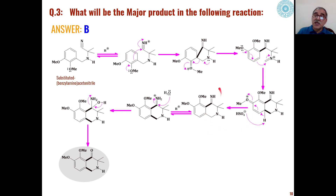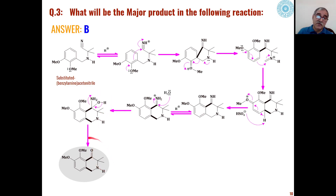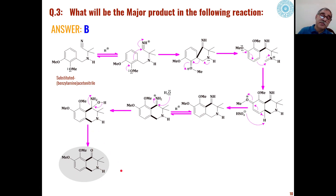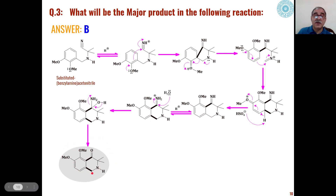Then this carbon-nitrogen double bond undergoes hydrolysis with the elimination of an ammonia molecule, and we will get these types of dihydropyridinones as the product. This is choice B in problem number 3, and this is formed as the major product.